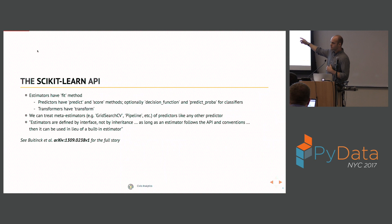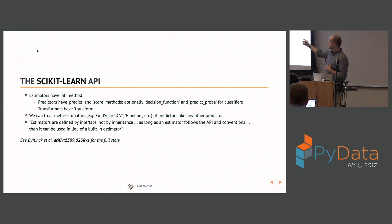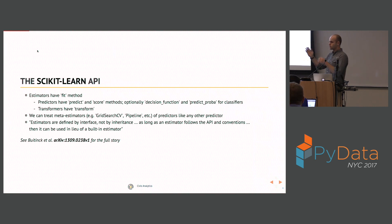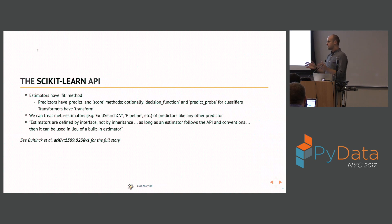What's cool about this is that by having the API specified this way, you can swap estimators in and out and compose them. Things like meta-estimators, like the GridSearchCV or RandomSearchCV class, will take in a predictor and a grid of parameters and give you the best model. Pipeline is another really cool meta-estimator where you can chain together transformers and then a predictor, and treat the whole thing as a predictor itself — it handles all the I/O between the pieces.